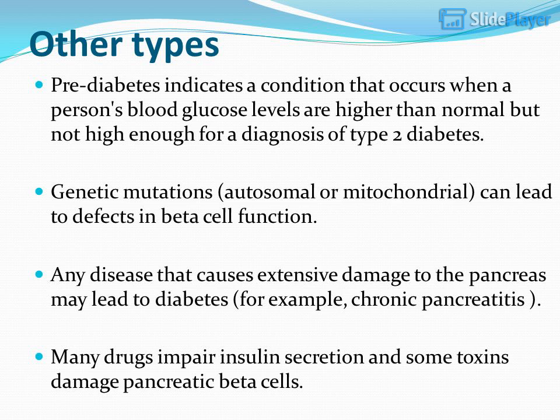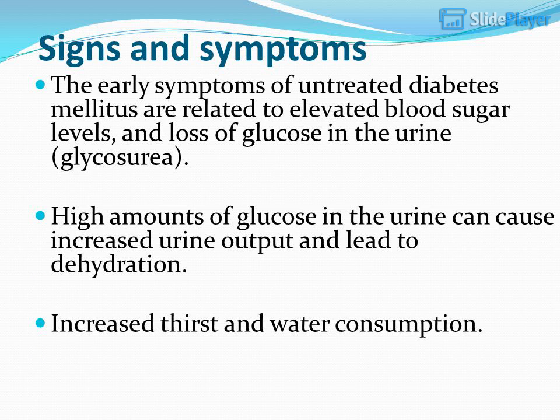Other types: Prediabetes indicates a condition where a person's blood glucose levels are higher than normal but not high enough for a diagnosis of type 2 diabetes. Genetic mutations, autosomal or mitochondrial, can lead to defects in beta cell function. Any disease that causes extensive damage to the pancreas — for example, chronic pancreatitis — may lead to diabetes. Many drugs impair insulin secretion and some toxins damage pancreatic beta cells.